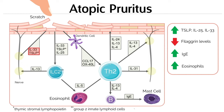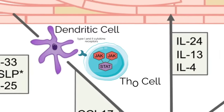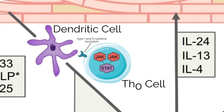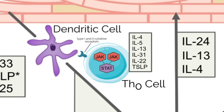Additionally, the JAK and STAT proteins bind to the type 1 and type 2 cytokine receptors at multiple sites in the atopic dermatitis inflammatory response. Upon binding, the JAK proteins phosphorylate STAT proteins. The JAK-STAT proteins selectively associate with different cytokines, including IL-4, IL-5, IL-13, IL-31, IL-22, and TSLP, propagating inflammation and pruritus.